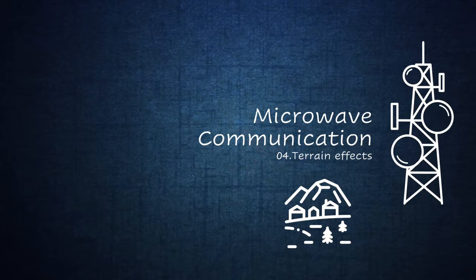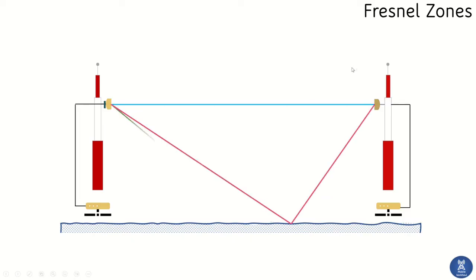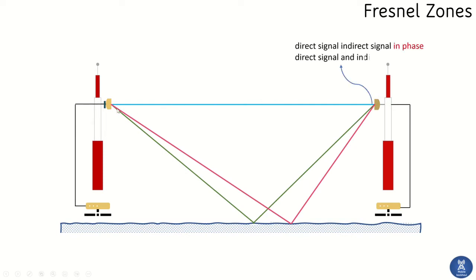In this session we will discuss how terrain affects microwave communication. For example, from site A to site B there will be a direct signal — the blue one — and reflected signals — the green and red ones.